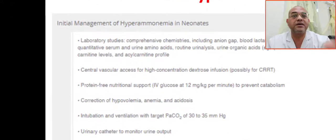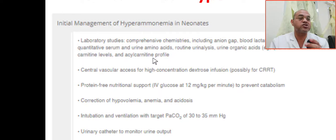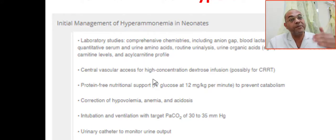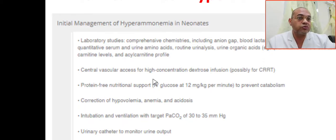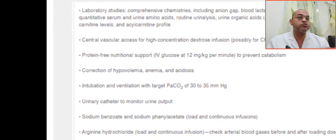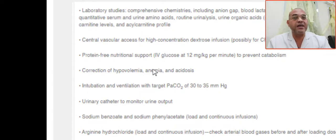In a systematic approach, first take specific laboratory investigations: serum and urine amino acids, urine organic acids, pyruvate, blood gas, carnitine, and acylcarnitine. Then secure central access for high-concentration dextrose infusion and because this patient may need continuous renal replacement therapy (CRRT). Provide protein-free nutritional support; glucose infusion rate should be 12 mg/kg/min to prevent a catabolic state.